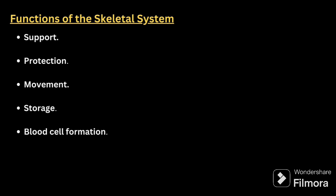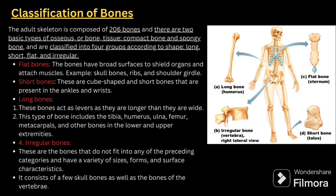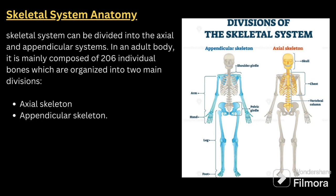After functions, we come to the classification of bones. The adult skeleton is composed of 206 bones. There are two basic types of osseous or bone tissue: compact bone and spongy bone. Bones are classified into four groups according to shape: long bone, flat bone, short bone, and irregular bone. Flat bones have a broad surface to shield organs — for example, skull bones, ribs, and shoulder girdle. Short bones are cube-shaped and found in the ankles and wrist. Long bones act as levers, being longer than they are wide — for example, tibia, humerus, ulna, femur, and metacarpals.